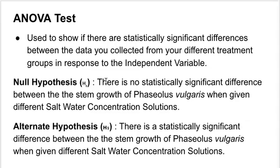So that was the example we were using before. The alternate hypothesis would be that there is a statistically significant difference between the stem growth of Phaseolus vulgaris when given different saltwater concentration solutions.